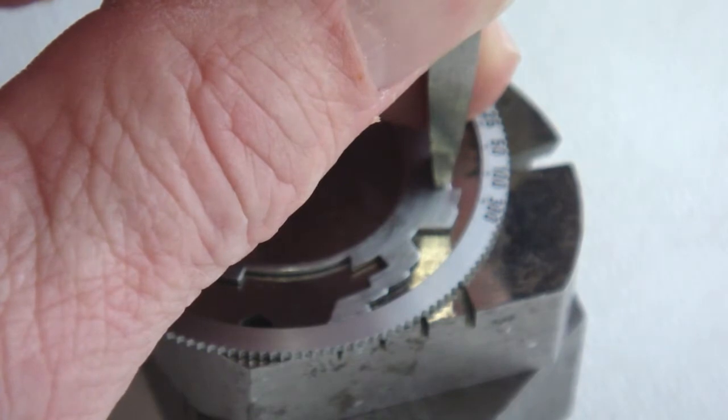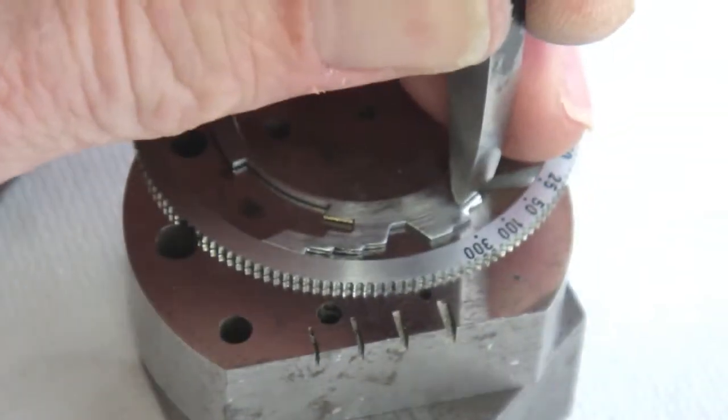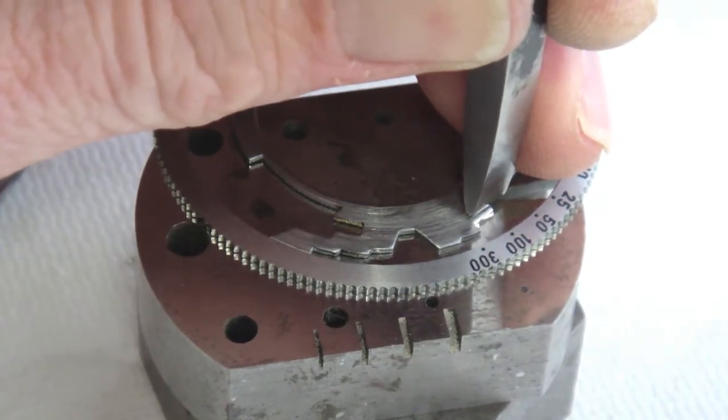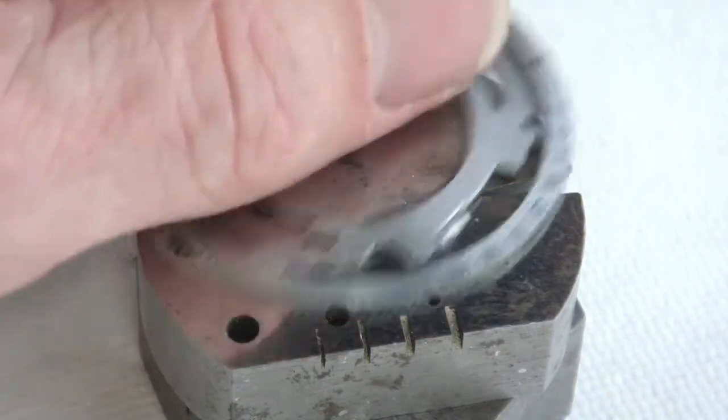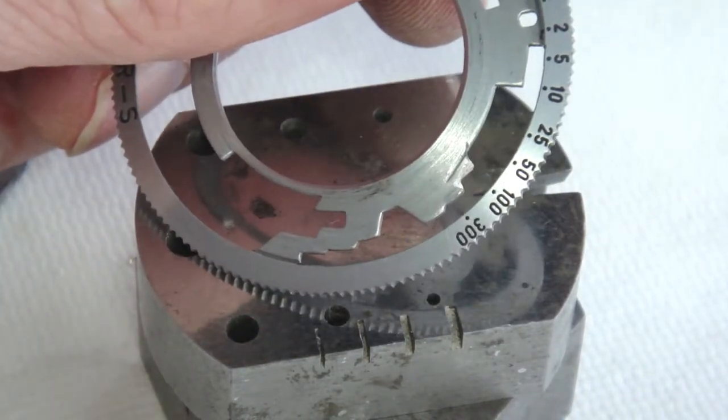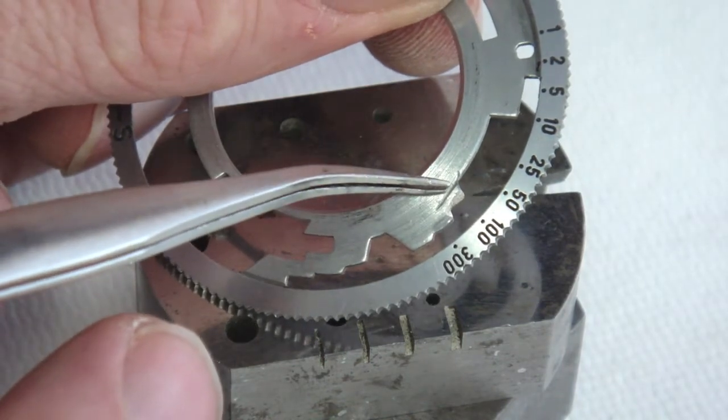Do not position the punch too close to the edge of the speed cam so it does not slip off when being struck. Striking a groove pushes the lobe edge of the cam so it engages deeper with the cam follower.